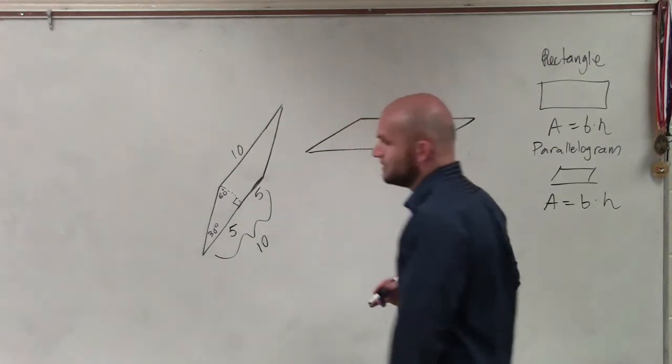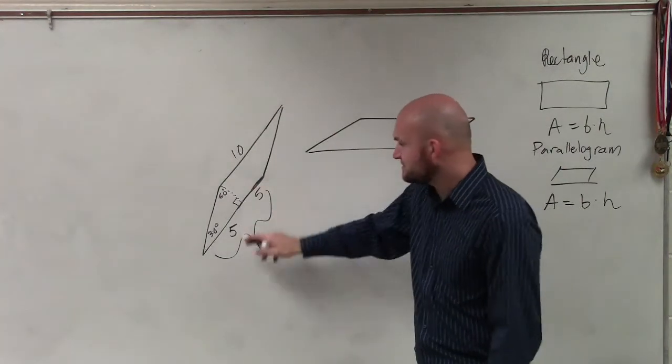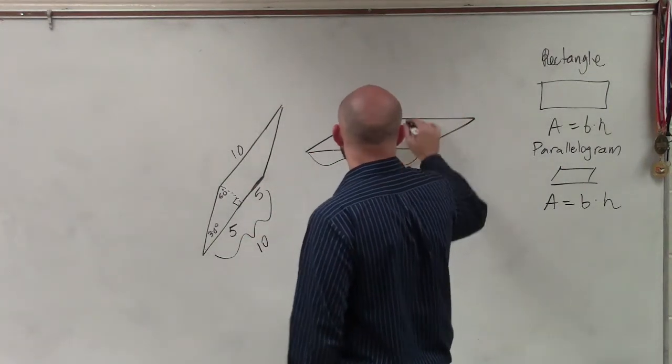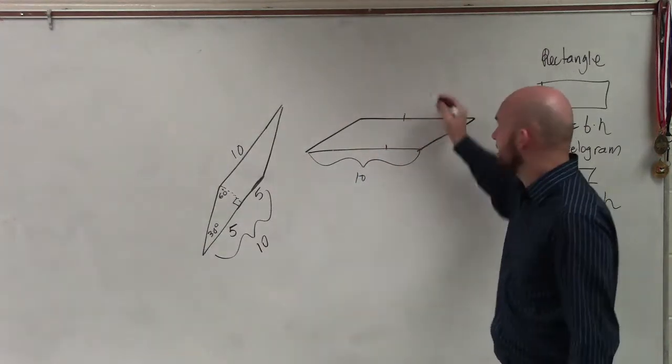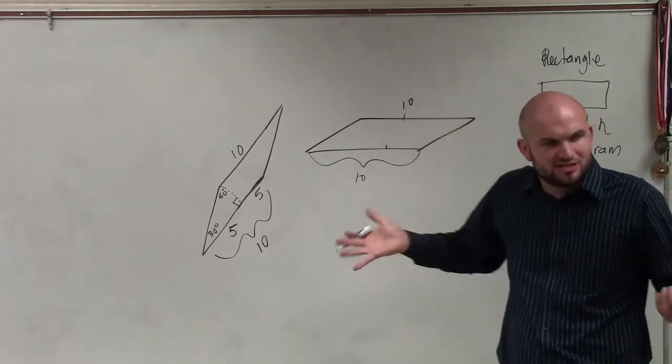All right, so I'm just going to re-rotate it like this. I know that that's 5, that's 5, so that's 10. I can call that my base. Now remember, opposite sides of a parallelogram are the same. So you can write that as 10, but it doesn't really matter. You just need the base.